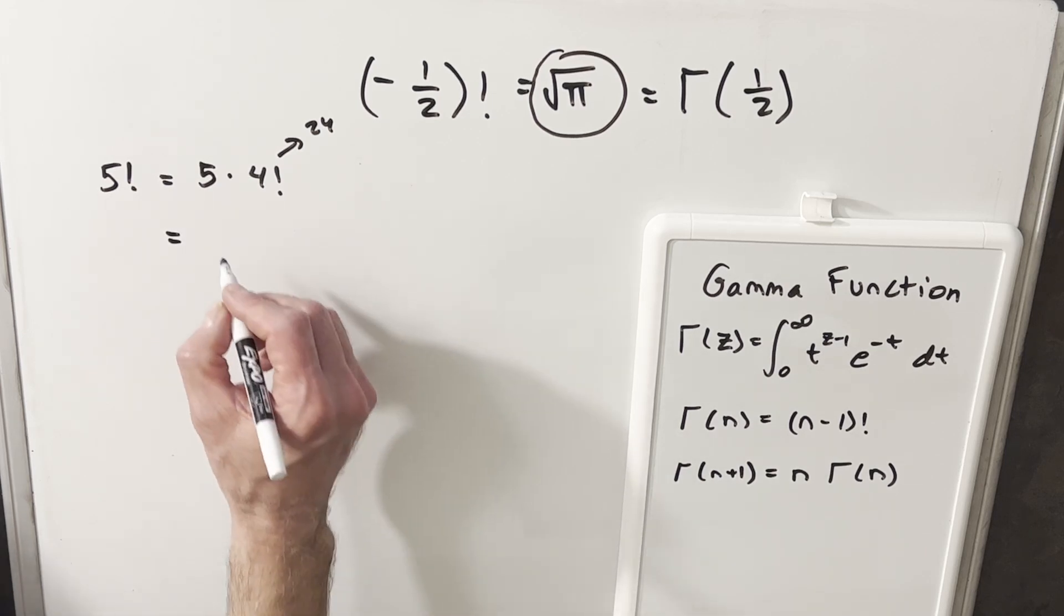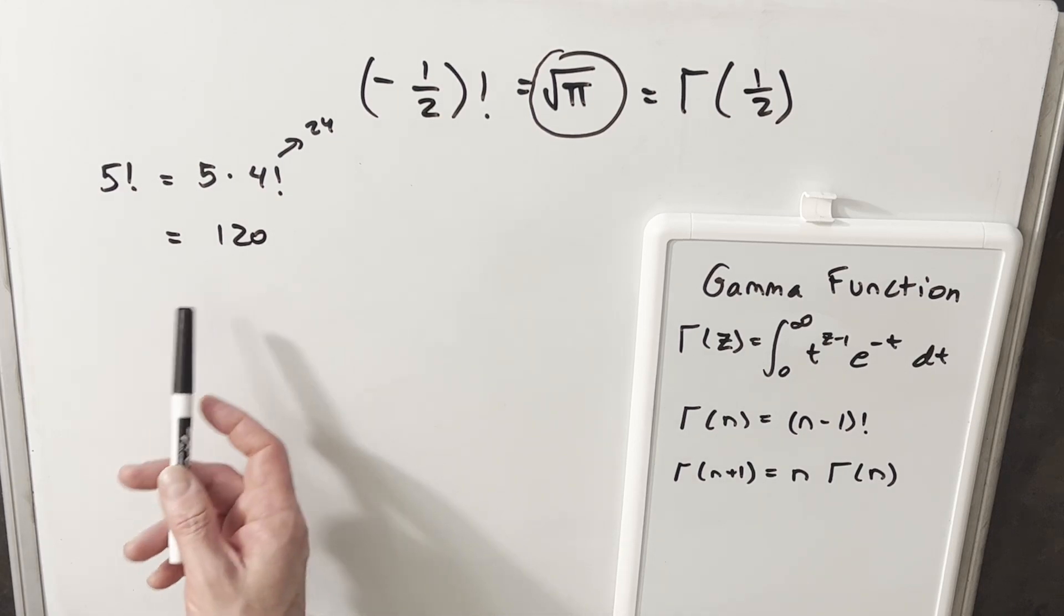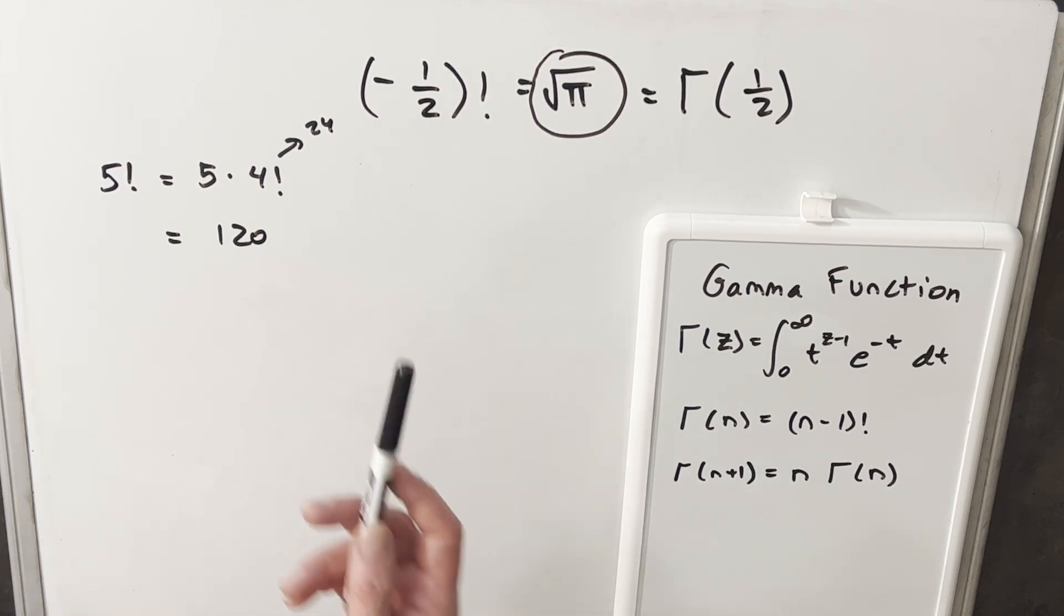Well, now I just need to multiply 5 times 24, right? And I have 120. And you might think, okay, that's not very useful. This is a pretty common value. I can get this with a calculator, right?